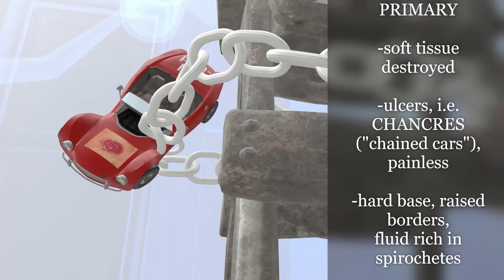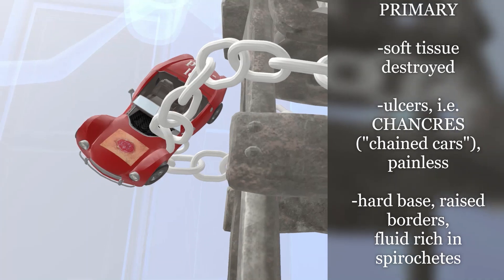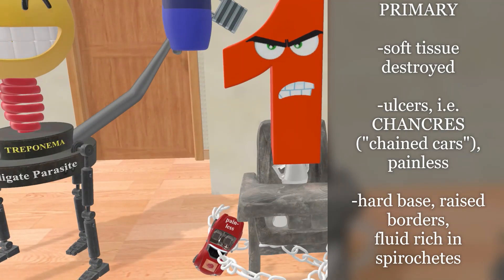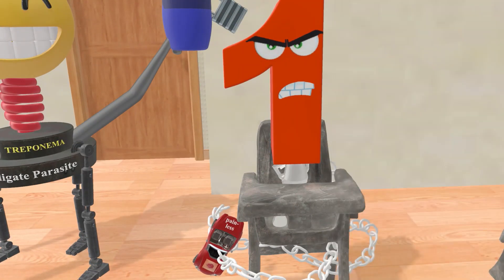These spirochetes can spread to other parts of the body as well as to other individuals. In individuals who acquire syphilis through sexual contact, the primary chancre develops around the external genitalia. If syphilis is acquired through a blood transfusion, there may not be any primary chancre, or even any localized stage of the disease at all.